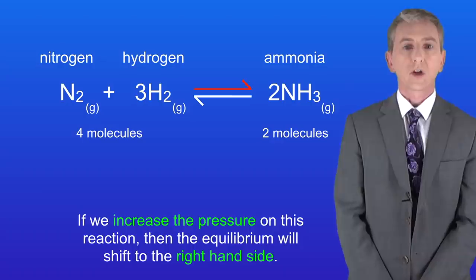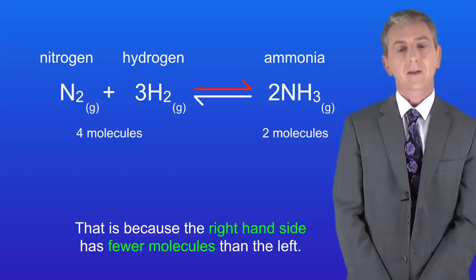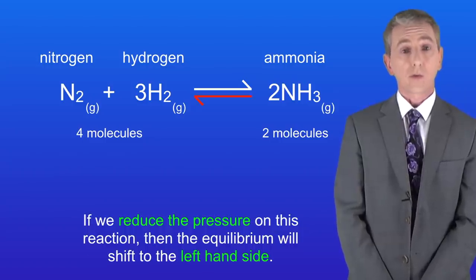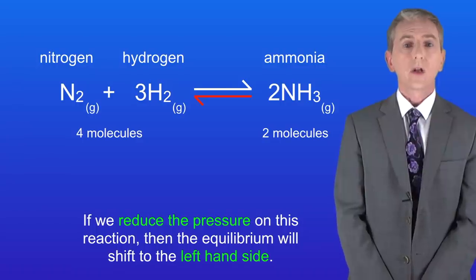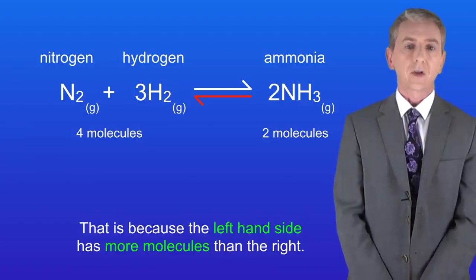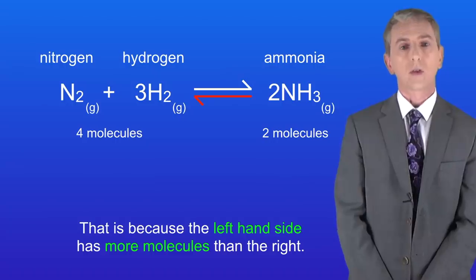So if we increase the pressure on this reaction then the equilibrium will shift to the right hand side. That's because the right hand side has fewer molecules than the left, and if we reduce the pressure on this reaction then the equilibrium will shift to the left hand side, and again that's because the left hand side has more molecules than the right.